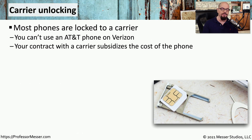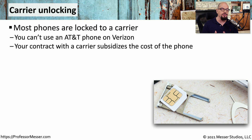You may not realize it, but the smartphone you're using is probably locked to the carrier you're using. In the United States, if you're using AT&T, you can only use this phone on an AT&T network. You can't take this phone from AT&T and start using it on a Verizon network because the phone has been locked to AT&T. This is primarily because the carrier is subsidizing the cost of the phone — instead of paying full price, the carrier subsidizes the cost over your monthly contract, which is why AT&T doesn't want you to take that phone over to Verizon.